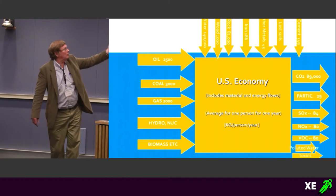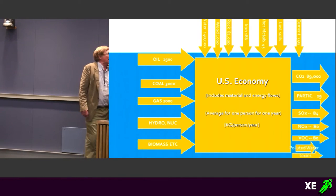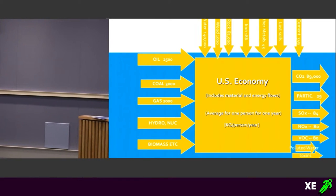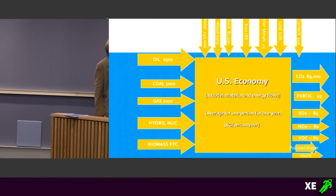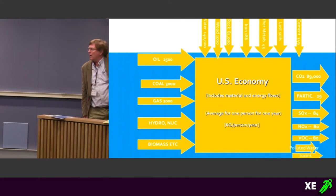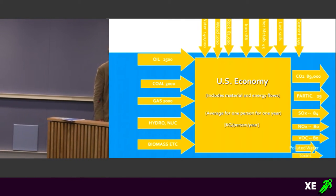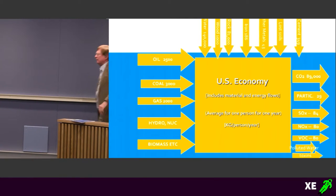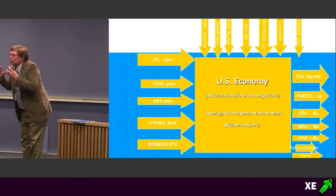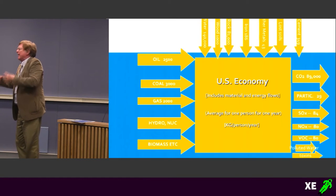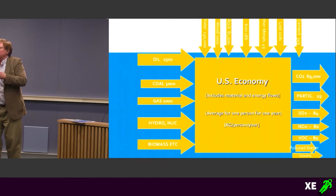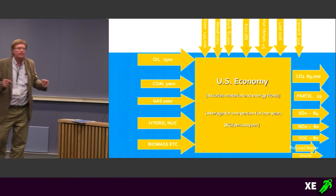The real inputs are oil, coal, gas, hydro, nuclear, water, wood, rock, etc. — measured in kilograms. And the outputs are not just GDP, but CO2, particulates, SOx, NOx, you name it. This is what an economy really and truly is. This is what we have to teach our freshmen. That first model is not true.